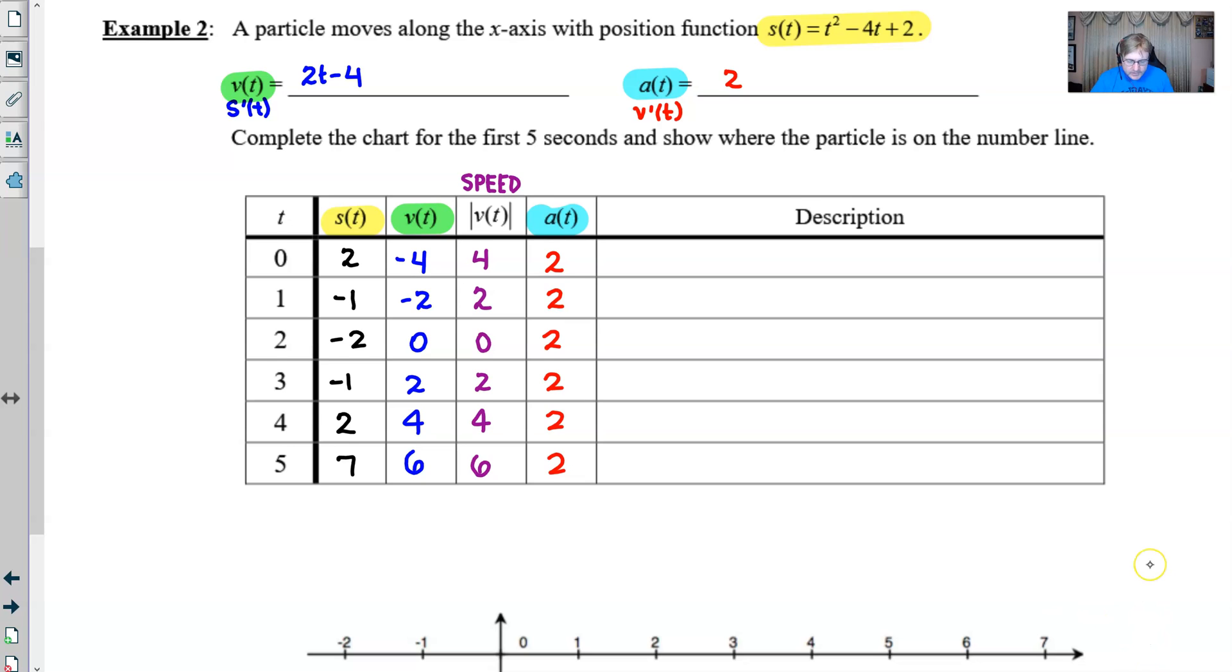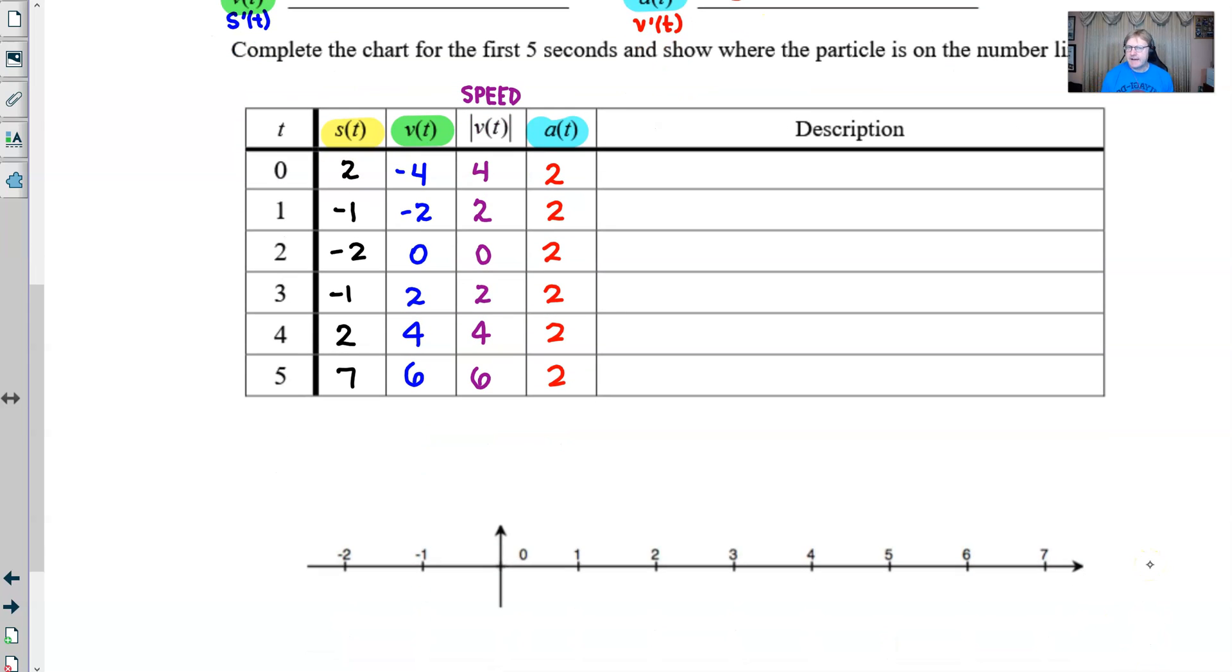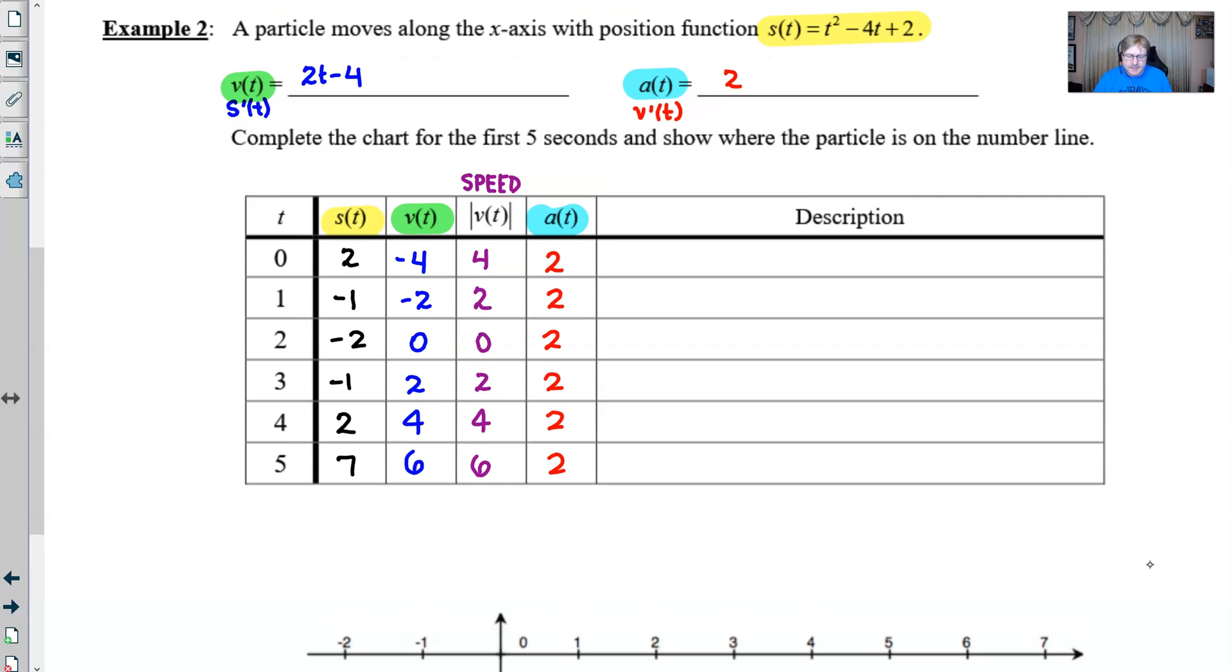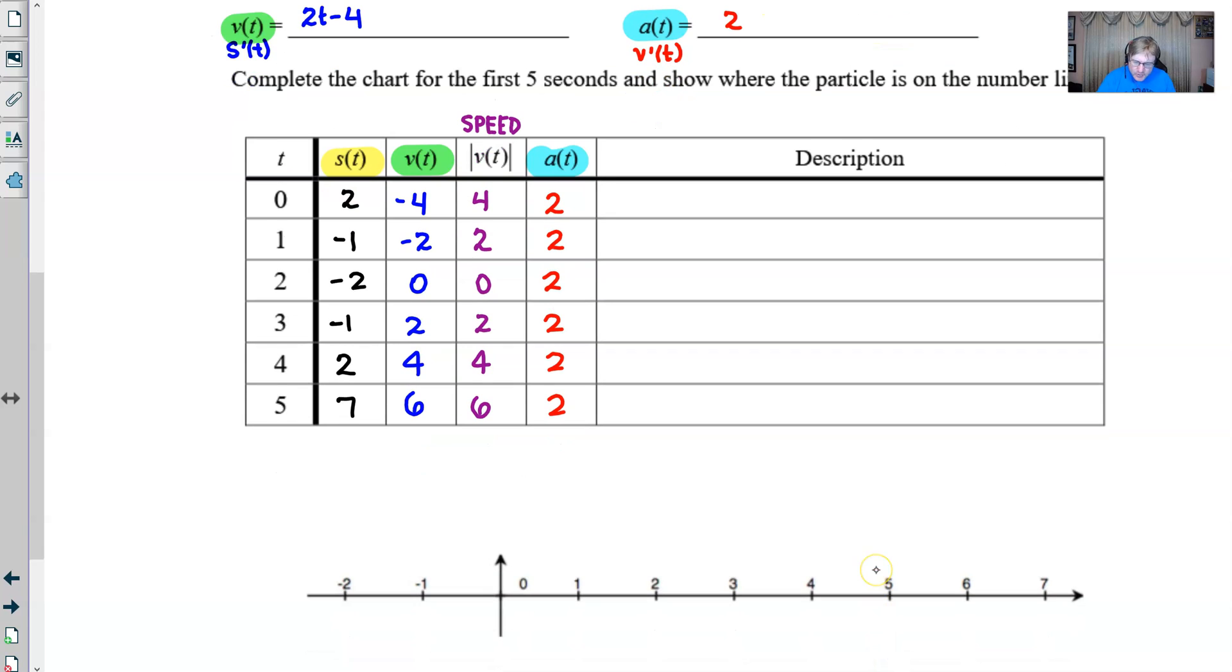Now, what I want to do is move to the number line first, and then we'll talk about filling in this description, which is really the meat and potatoes of this problem, in my opinion. It says to complete the chart for the first five seconds and show where the particle is on the number line. But we did something like this in a previous example, so I don't think that this is going to be too terribly difficult. In other words, we know that our position is going to be at 2 at time 0. So I'll put a little mark right here on the number line and know that that's going to correspond to time 0.